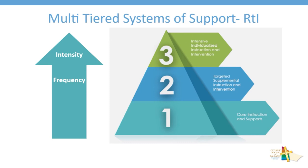The tiers are not discrete and separate, but rather are fluid in design. Support at these levels is supplementary to core instruction at the universal Tier 1 level. Decision-making at the school must ensure that the best matched intervention with the required intensity and frequency of support is offered to ensure progress for all identified students.